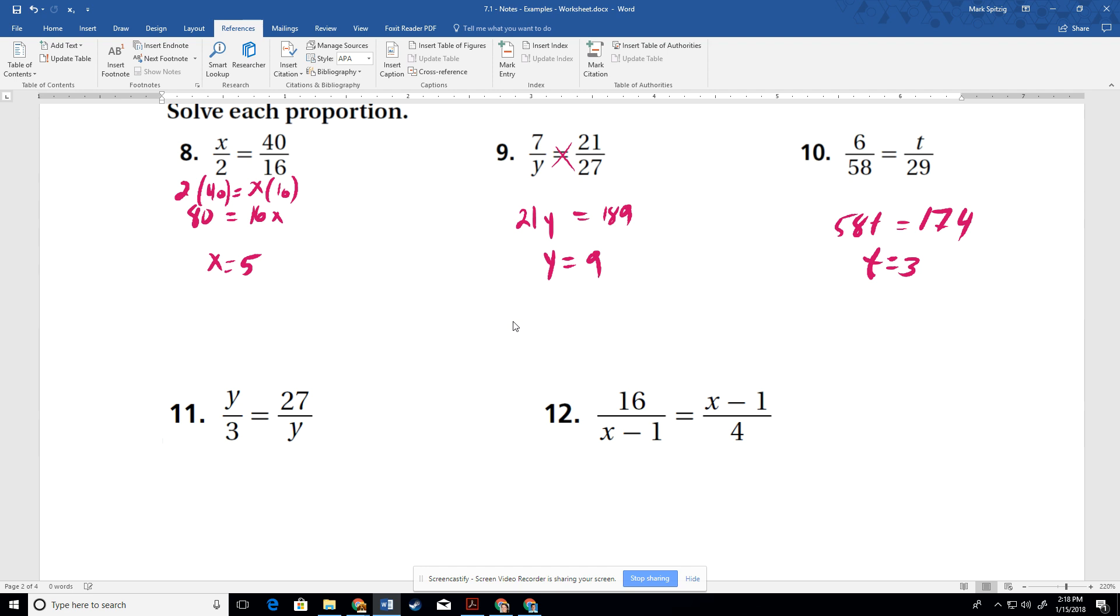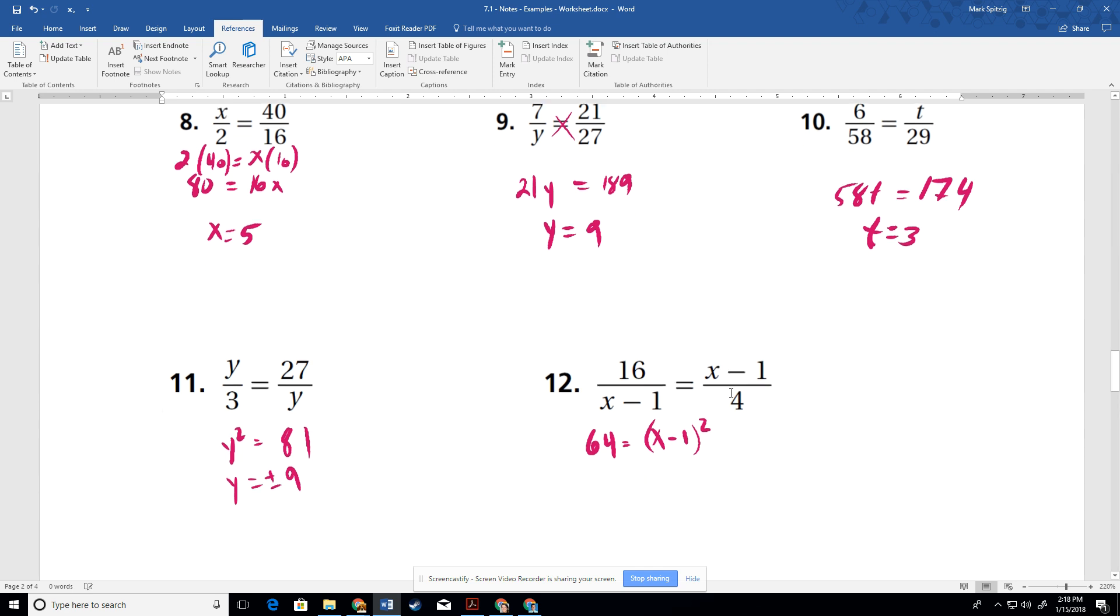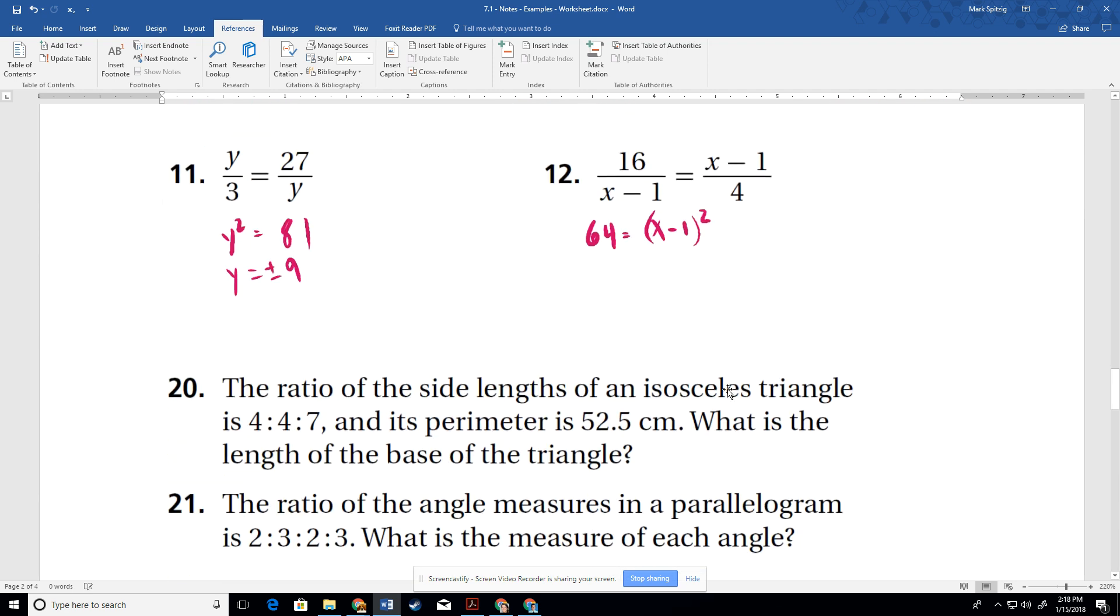Okay. This one, we get y times y, which is y squared. 3 times 27 is 81. And so we get y squared equals 81. So we take the square root and we get y equals plus or minus 9. In this case, we get 16 times 4, which is 64. And we get x times 1, which is basically (x minus 1) squared. And again, a couple ways to go from here. You could take the square root of both sides if you want, or we can just multiply it out and then factor it.